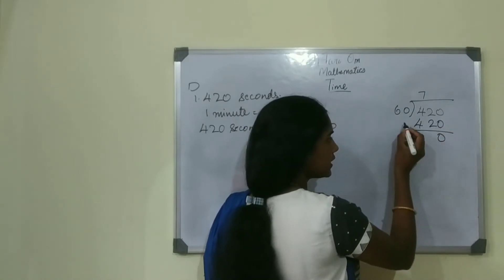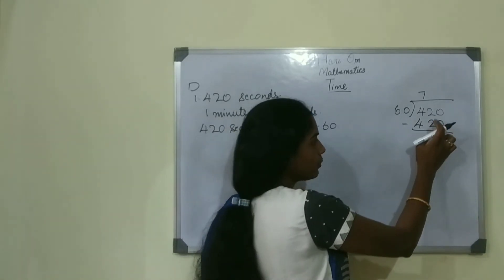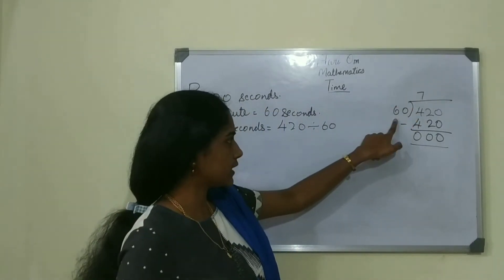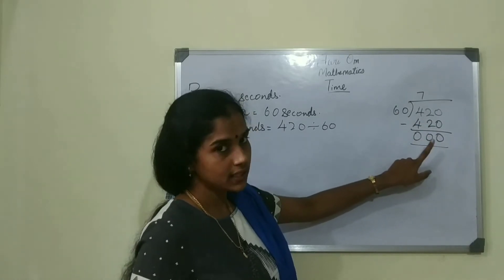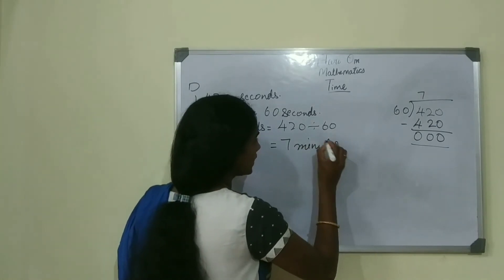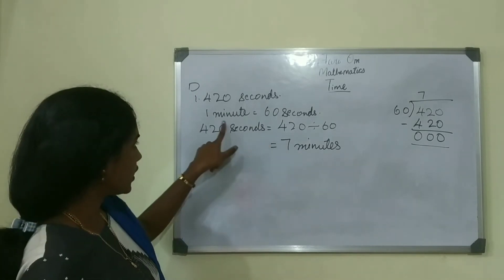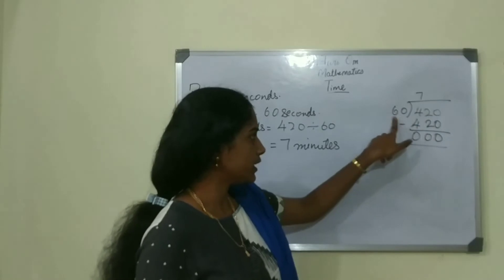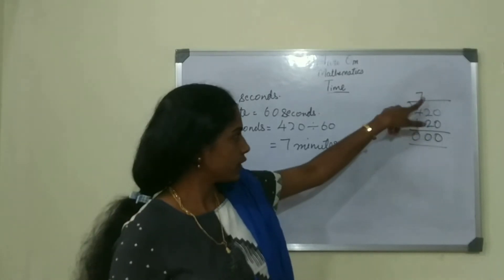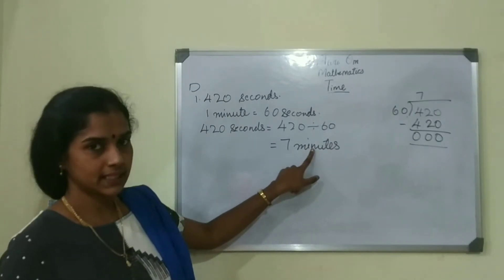420 minus 420 is 0, so we are left with 0. The quotient is 7. So 420 seconds converts to 7 minutes. 420 divided by 60, 60 sevens are 420, quotient is 7, remainder is 0. The answer is 7 minutes.